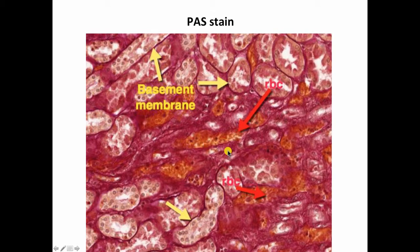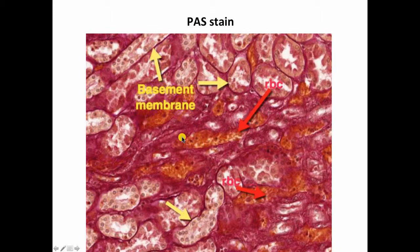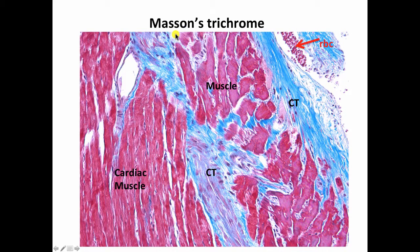Here's the periodic acid Schiff stain, which stains carbohydrate-rich structures. Basal laminae have a type 4 collagen in them, and type 4 collagen is a carbohydrate-rich type of reticular collagen, so the basal laminae and basement membranes of epithelial cells stain well with this stain. Additionally, erythrocytes — red blood cells — stain yellowy-orange with the PAS stain. Connective tissue that contains a lot of carbohydrates will also stain red, but particularly you need to remember that this is a stain that brings out basement membranes.